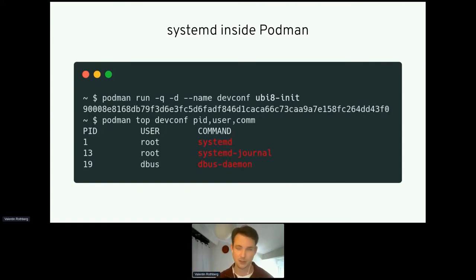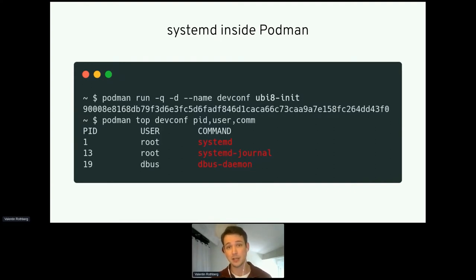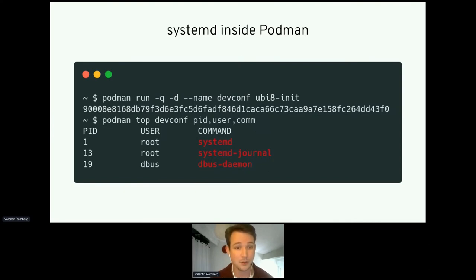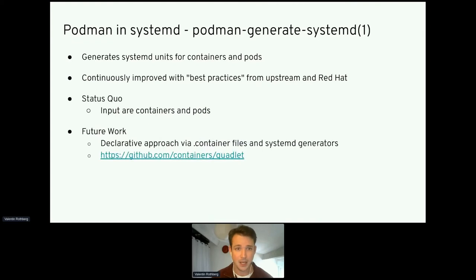You can further tweak this with the --systemd command-line flag. In the terminal example, we run a ubi8-init container — a UBI8 image with systemd pre-installed. If we run 'podman top' on this container and list the process IDs, users, and commands, we can see systemd is PID 1, exactly as it's supposed to be, with the journal and device daemon also running.